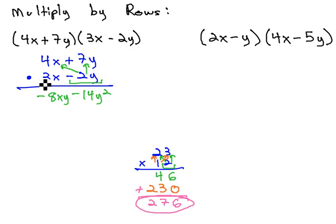Now, we can move to the next term, the 3x, but as we do, we need a 0 as a placeholder. 3x times 7y is positive 21xy, and 3x times 4x is 12x squared.